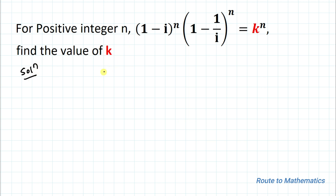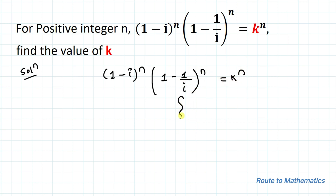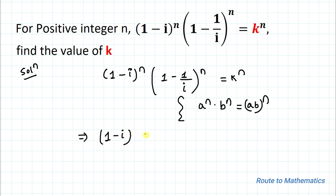Our given equation is (1 - i)^n multiplied with (1 - 1/i)^n equals k^n. We have a basic exponential rule: a^n multiplied with b^n can be written as (ab)^n. Taking (1 - i) as a and (1 - 1/i) as b, we can write this equation as [(1 - i)(1 - 1/i)]^n equals k^n.